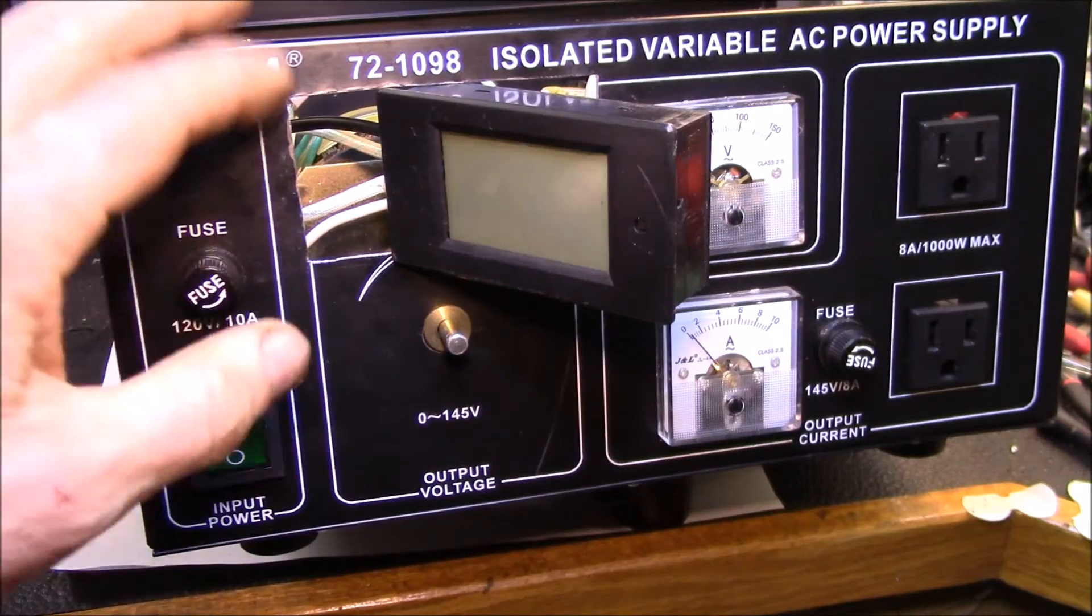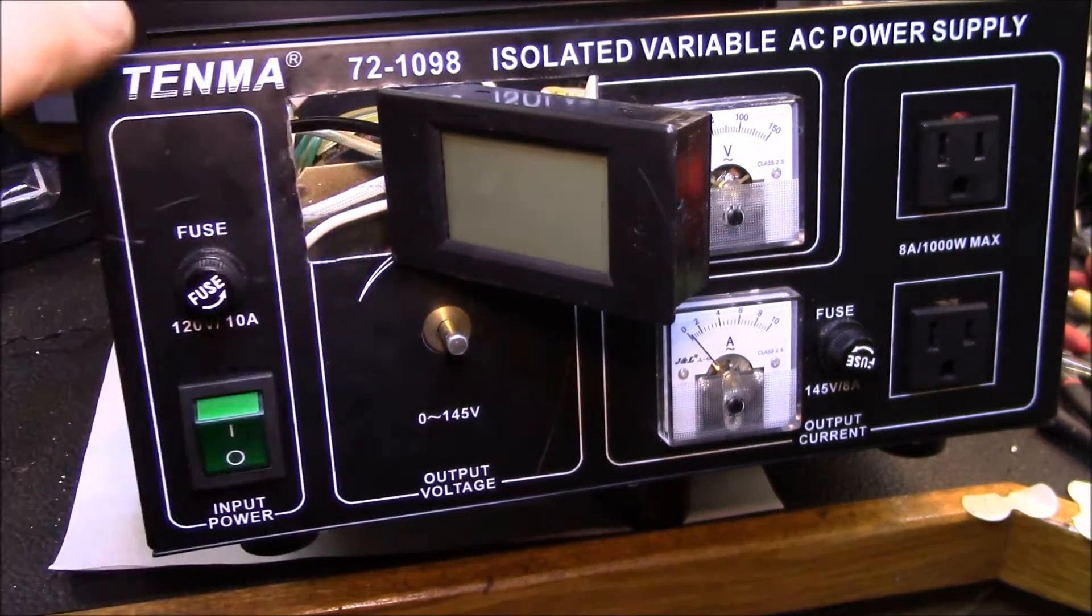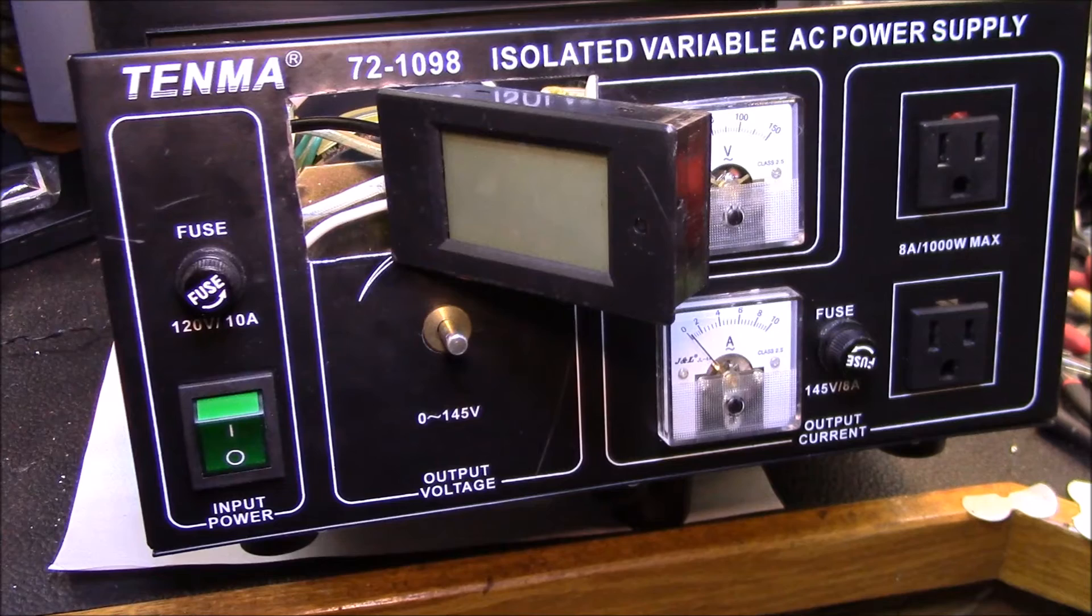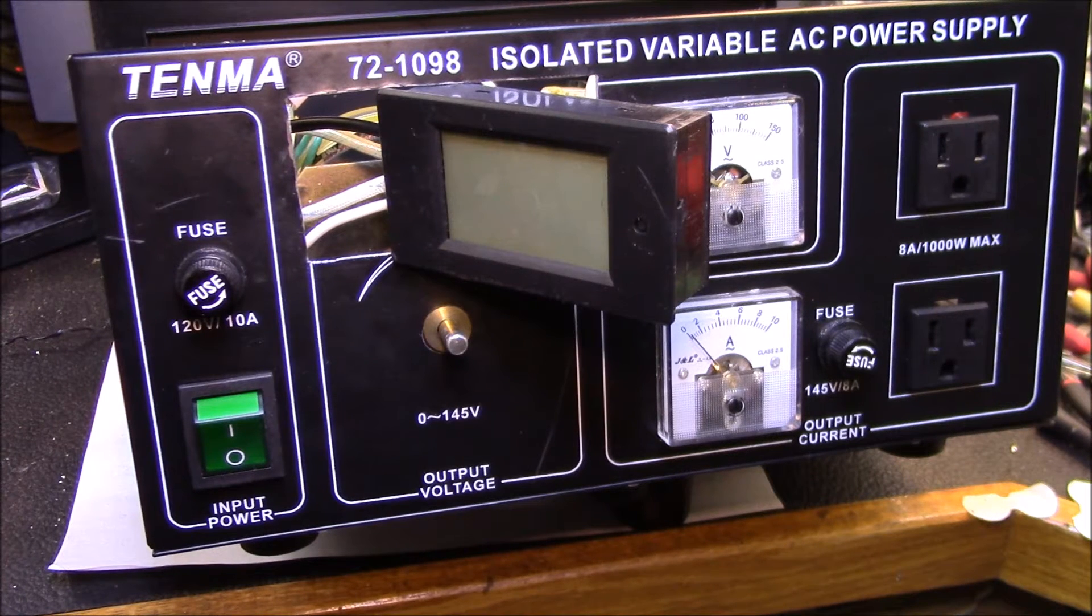I've got the meter hooked up with the line and neutral from the variac connected to the line and neutral terminals on the meter. The line and neutral wires from the load, which are the two outlets, are hooked to the outside two terminals.